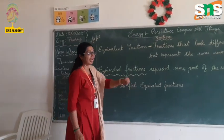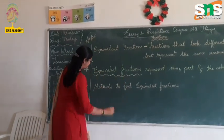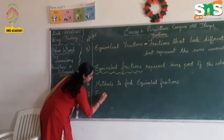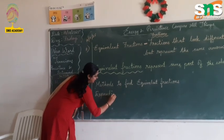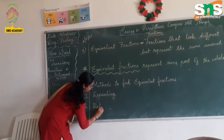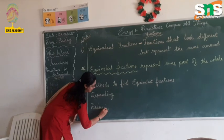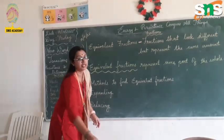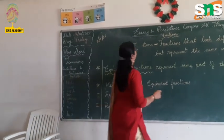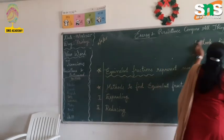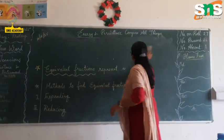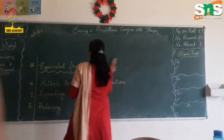The methods to find the equivalent fractions are: one is by expanding the given fraction, and another one is by reducing the given fraction. So now we are going to see an example for both. Okay, children? Yes ma'am.